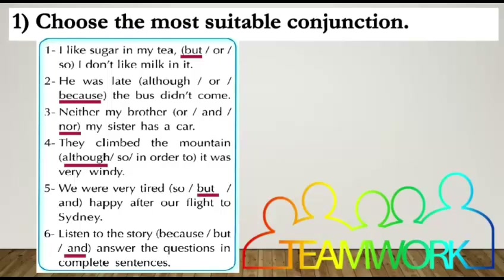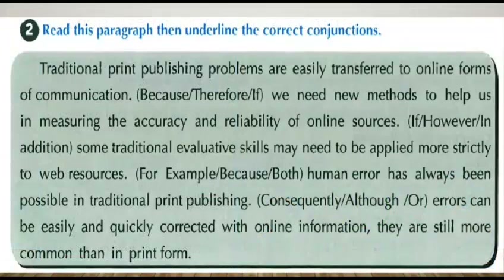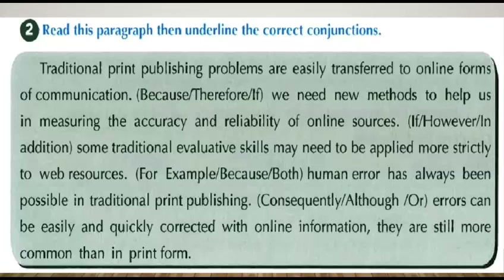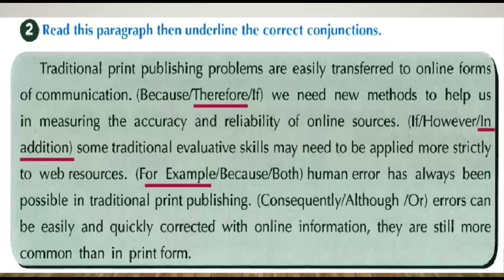Number six: listen to the story and answer the questions in complete sentences. Excellent! Let's move to exercise number two — read this paragraph, then underline the correct conjunctions. After reading, let's check our answers. The first one is 'therefore,' the second is 'in addition,' the third is 'for example,' and the next one is 'although.' Excellent!